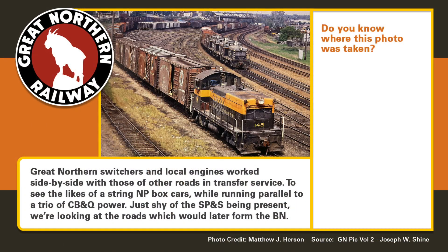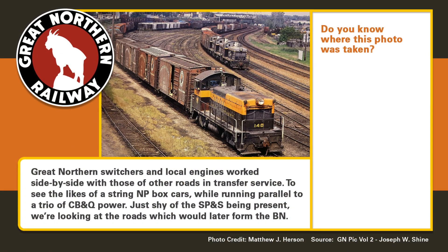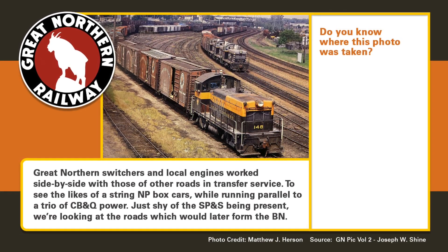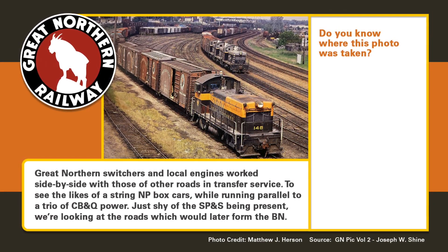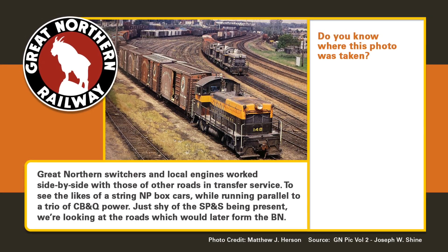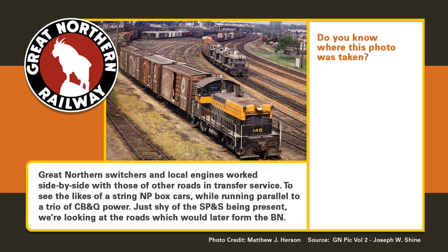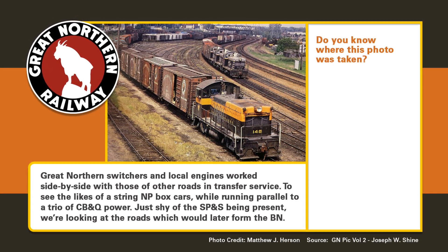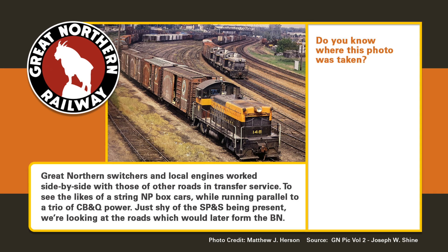It's time to test your information on what you know about the Great Northern. Maybe you'll learn a little something here. Great Northern switchers and local engines work side by side with other roads in transfer service. To see a string of NP boxcars while running parallel to a trio of CB&NQ power just shy of the SP — we're looking at the roads which would later become the BN. Do you know where this photo was taken? Was it A, Northtown? B, Dale Street? C, Westminster? Or D, Union? We'll find out after this segment.